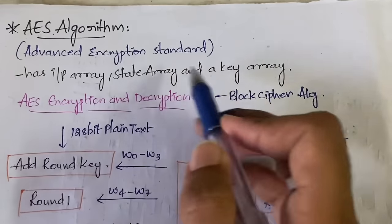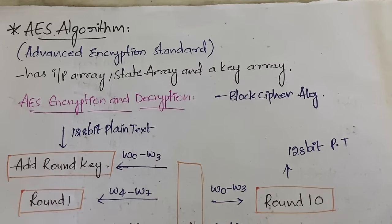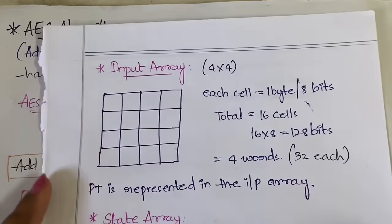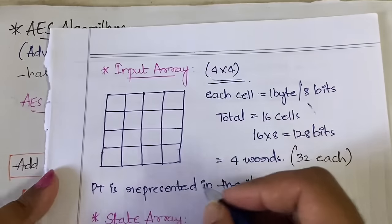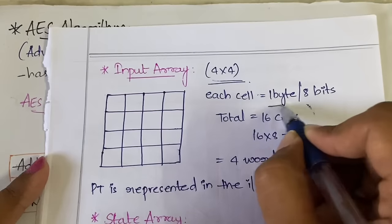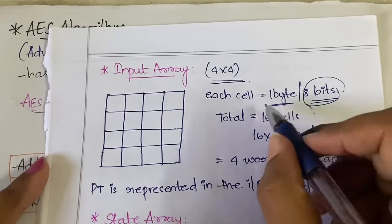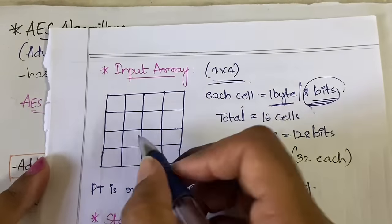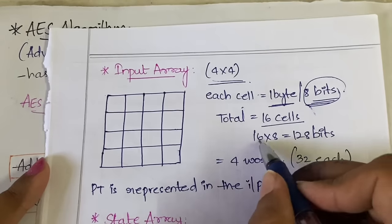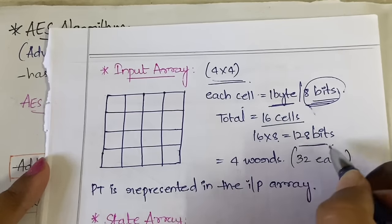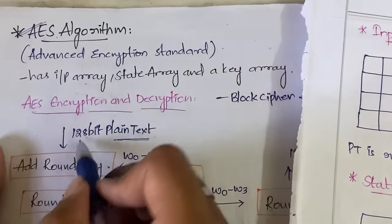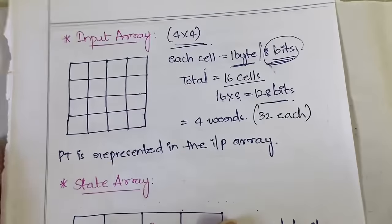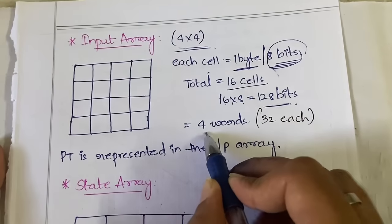AES has an input array, a state array, and a key array. The input array has a four-by-four grid of cells — four rows and four columns, totaling 16 cells. Each cell is equal to one byte, or eight bits. So total cells times bits: 16 into 8 equals 128. The size of the plain text in the case of the AES algorithm is 128 bits.